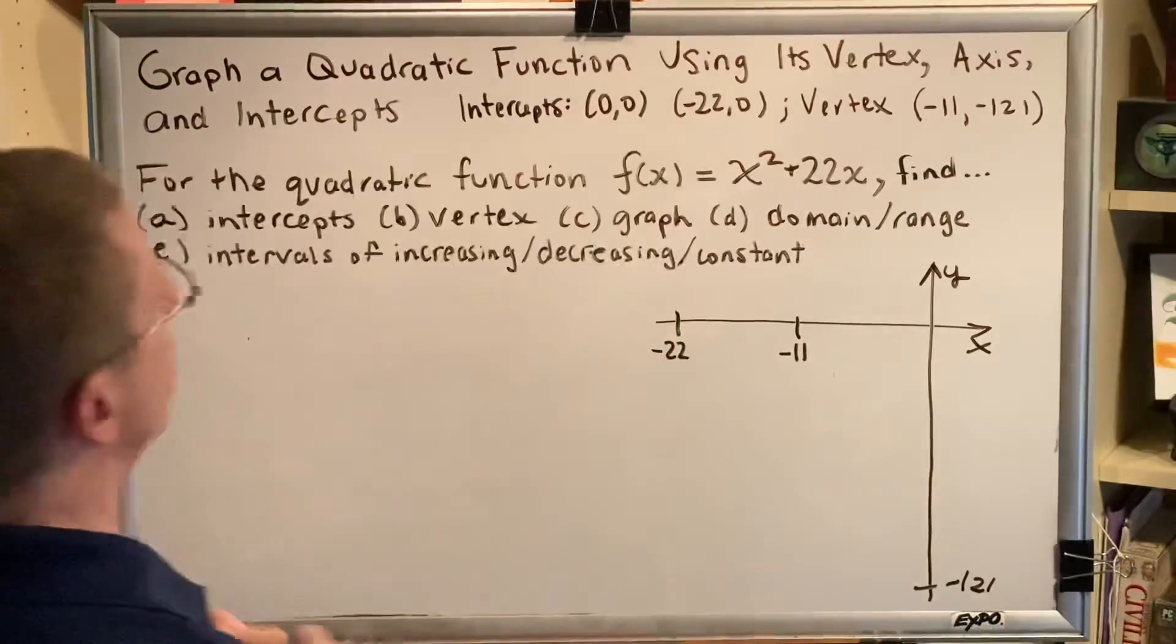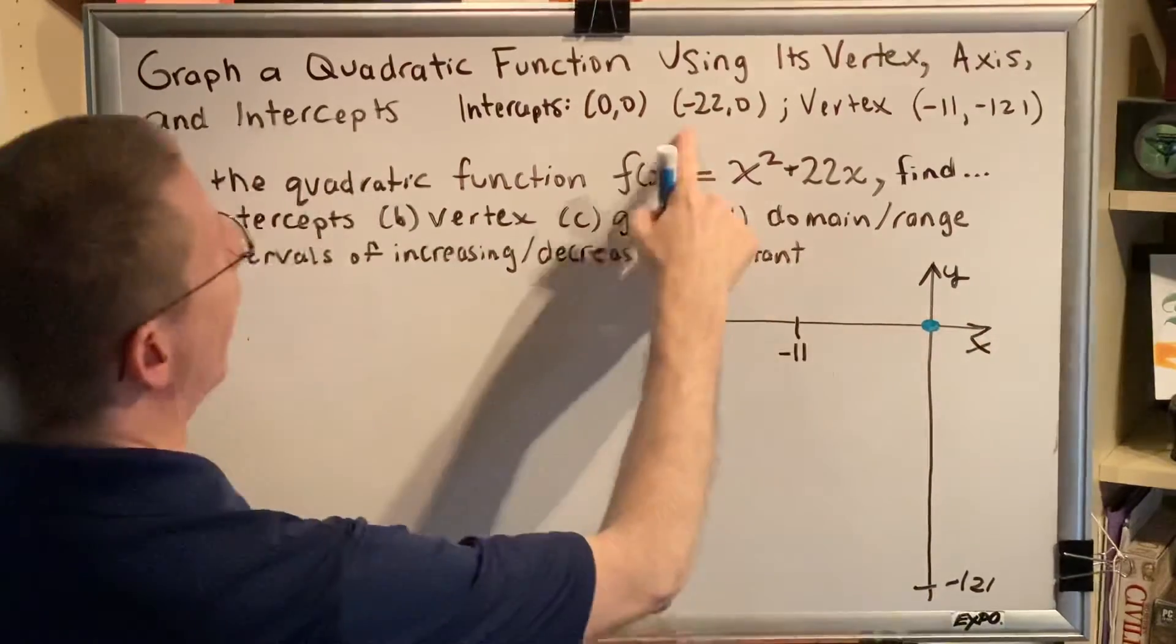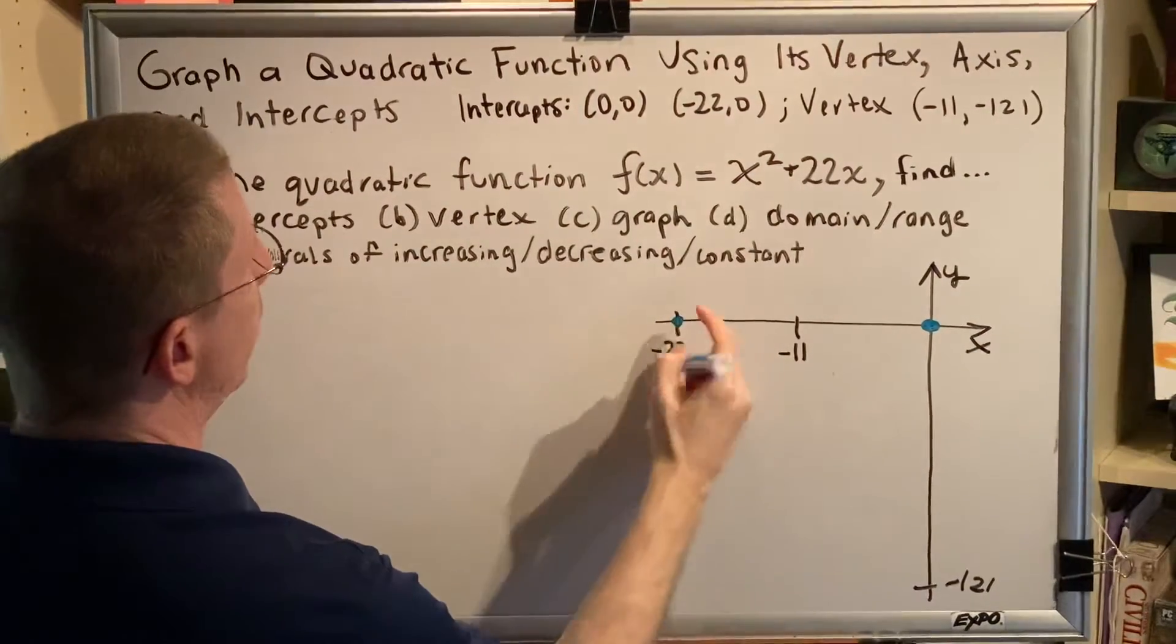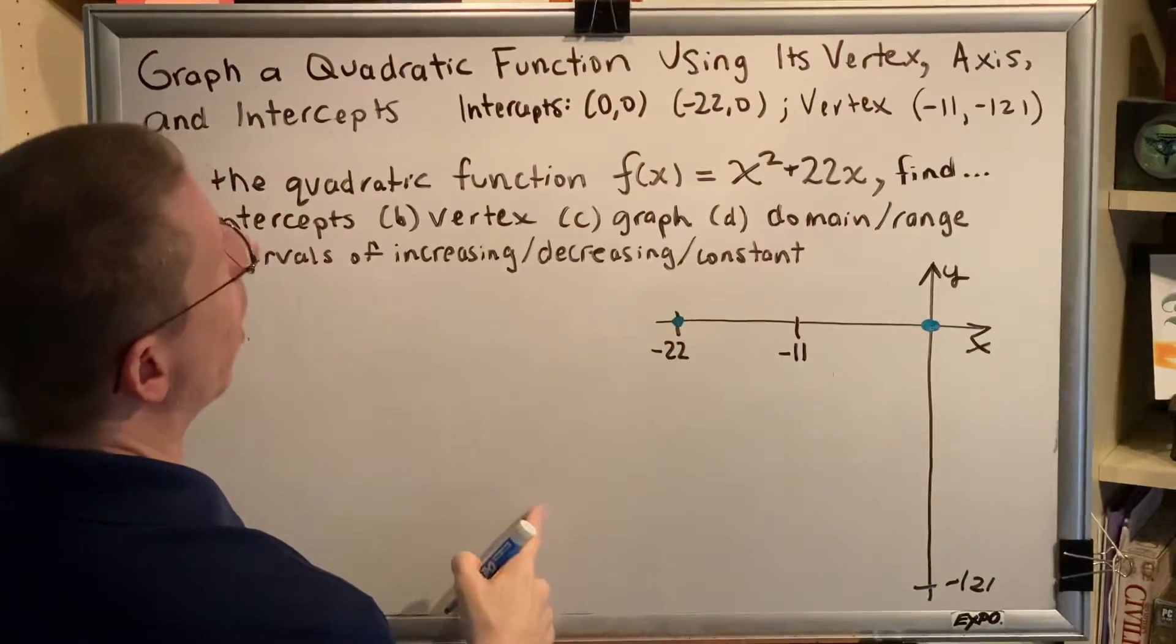Let's begin. 0, 0 is the origin. So we have this point. Negative 22 comma 0 would be here. These are the two x-intercepts. This one also happens to be the y-intercept.